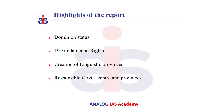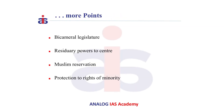Let us see some of the highlights of this report. First, dominion status shall be granted. Next, 19 fundamental rights were incorporated in this report. Next, creation of linguistic provinces. Next, responsible government at both center and provincial level. Next, bicameral legislature at two levels. Next, a federation in which residuary power should be given to the center. Next, reservations to the Muslims in the provincial legislatures where they are in minority, in proportion to their population. And finally, protection to the rights of minority.